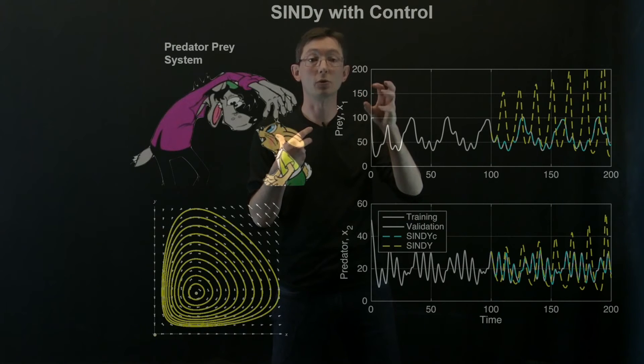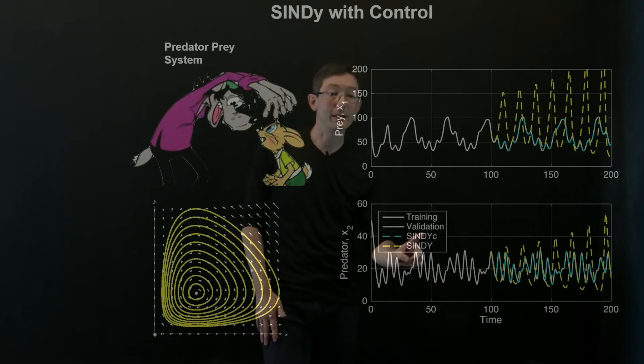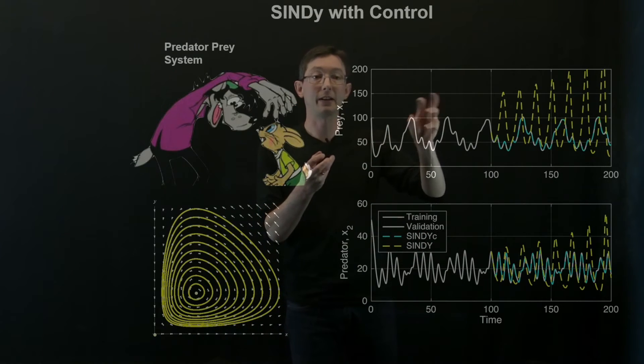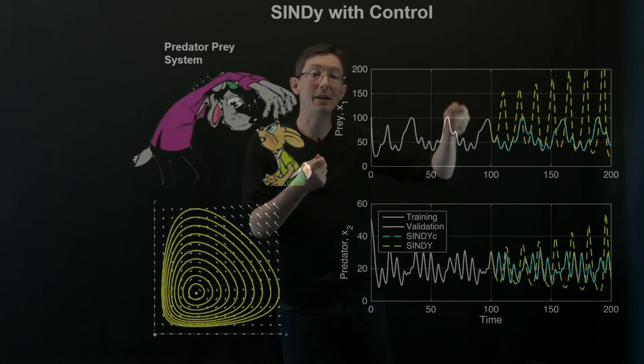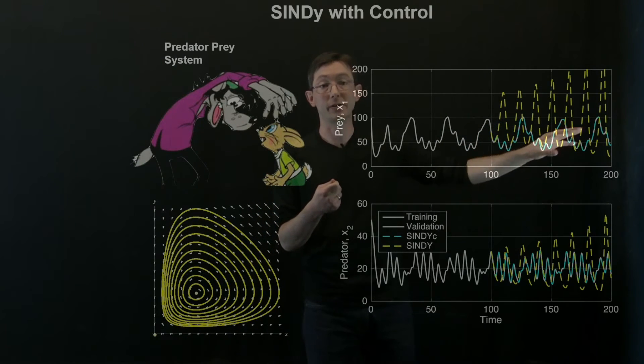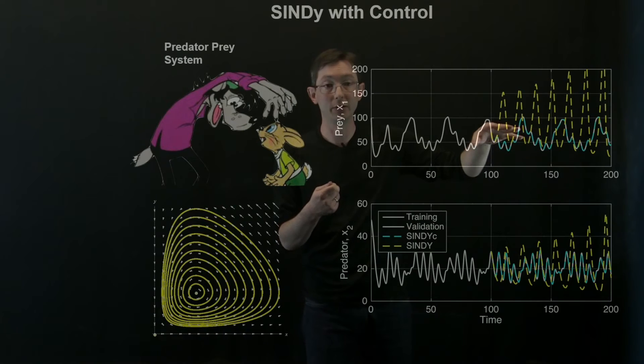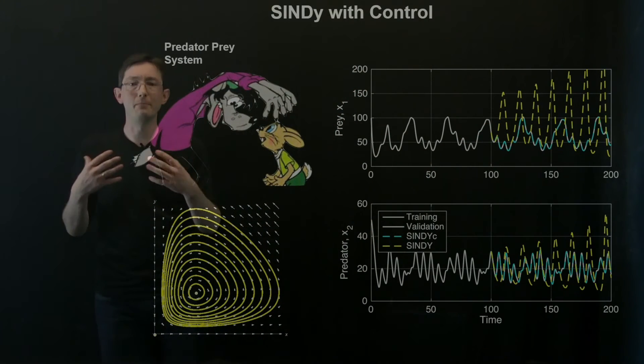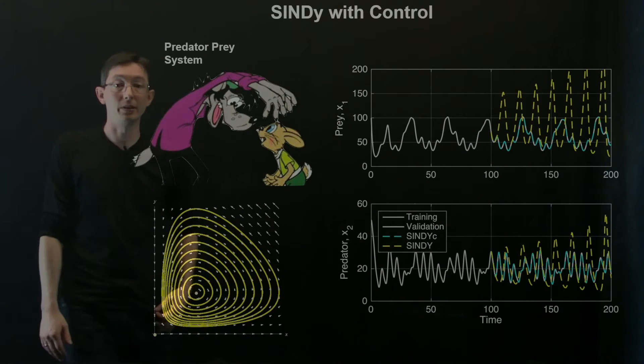Whereas my SINDy with control model knows that there's this u that's affecting my system, and as long as I measure what that u is I can accurately trace different control strategies in the future. So the blue agrees well with my validation. So that's kind of the high level view of SINDy with control.